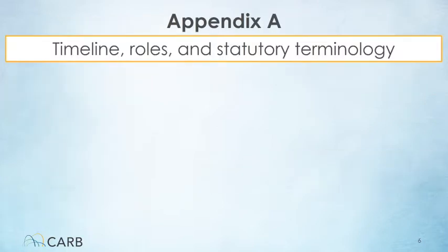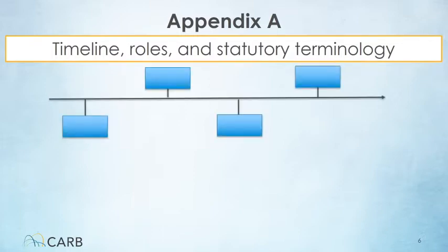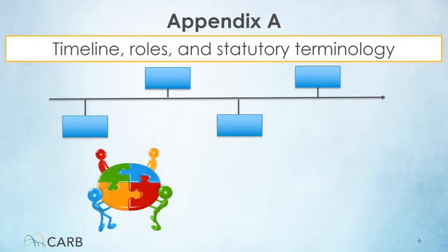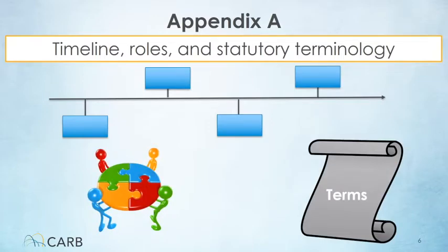Appendix A is a great starting place, providing background on the program timeline, roles and responsibilities, and how the blueprint language maps to terms found in statute.